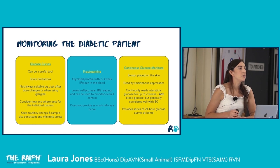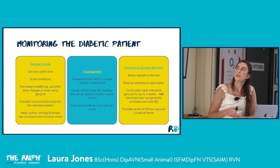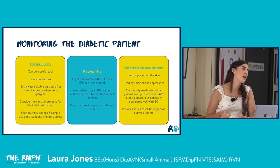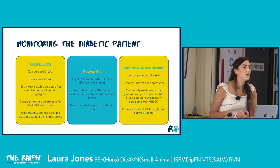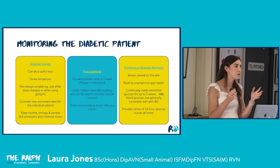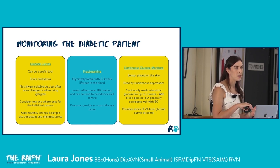For monitoring diabetic patients on treatment, we have three options: glucose curves, fructosamine testing and continuous glucose monitoring. Glucose curves give a lot of information but have limitations — if an insulin dose or type has been changed, we need 3 to 7 days for levels to equilibrate before getting an accurate reflection of glycemic control. For dogs, wait about three days from a dose change before curving; for cats, up to seven days. With longer-acting insulins like glargine, bloods every four hours are sufficient rather than every one to two hours.